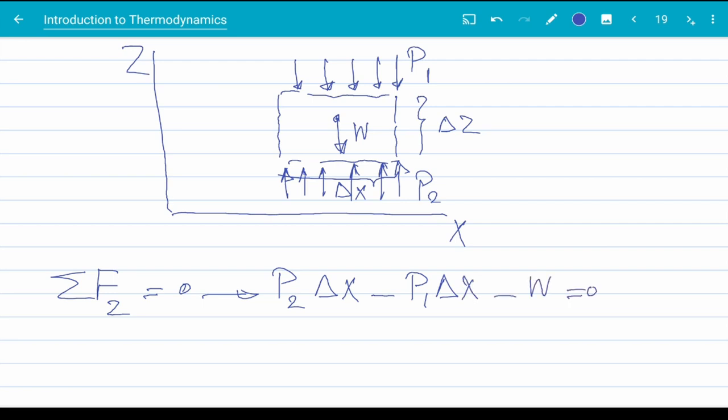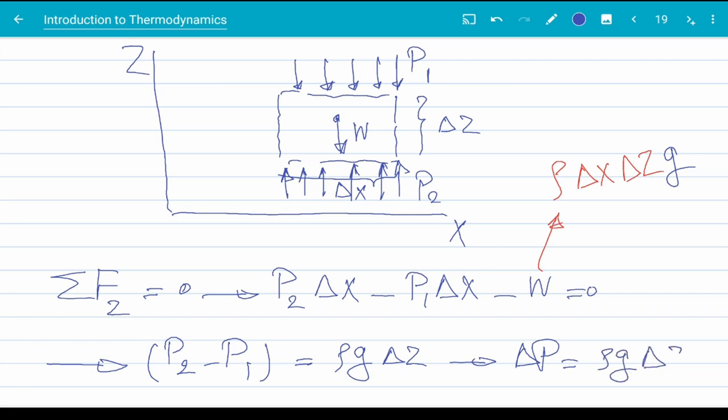So, sigma fz is equal to zero. If we want to expand that, that is p2 times delta x times unit depth, which is 1, which we are going to assume is 1 and neglect from now on, minus p1 times delta x minus the weight, which is equal to zero. Weight is the density of the fluid times volume of the element, times g. Now, here in the video, I forgot to write g initially, but I'll add it eventually. Now, if we plug everything in the equation and cross delta x from both sides, we are left with delta p equals to rho g delta z. So, that's where the equation comes from.